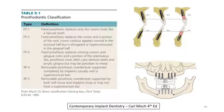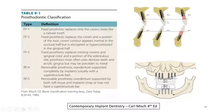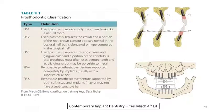The prosthodontic classification is divided into five types. FP1 is a fixed prosthesis that replaces only the crown. FP2 is a fixed prosthesis that replaces the crown and portion of the root. FP3 is a fixed prosthesis that replaces a portion of the crown and the gingiva. RP4 is a removable prosthesis supported by implants. RP5 is a removable prosthesis supported by soft tissue and the implant.